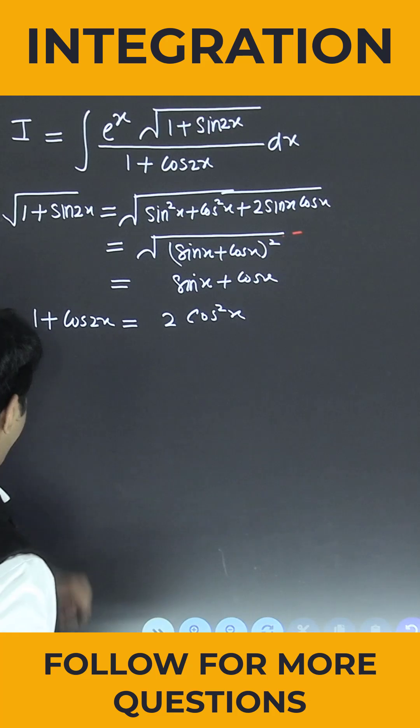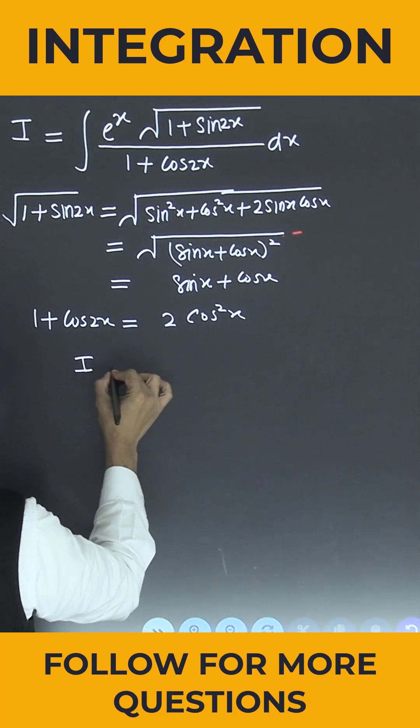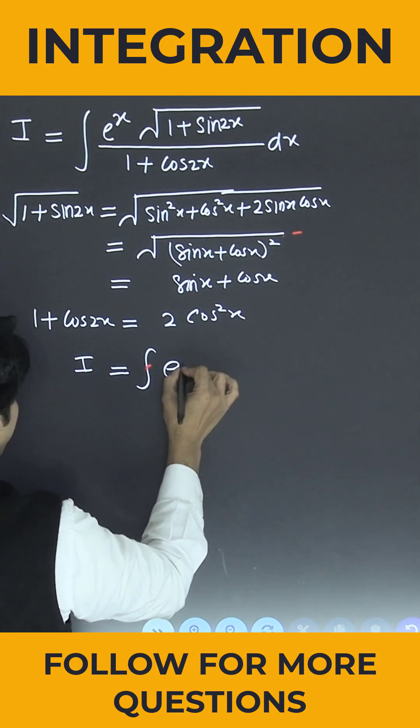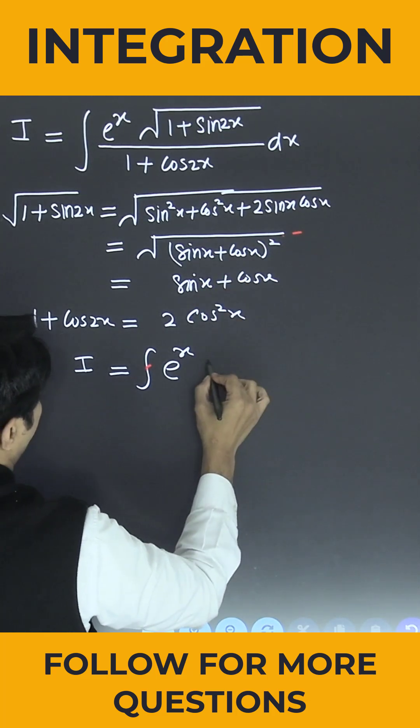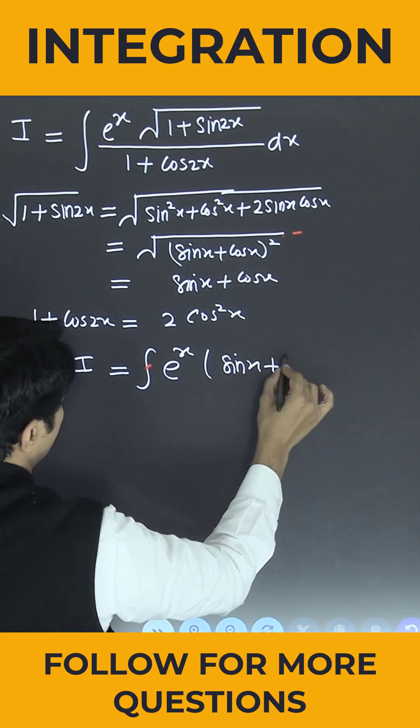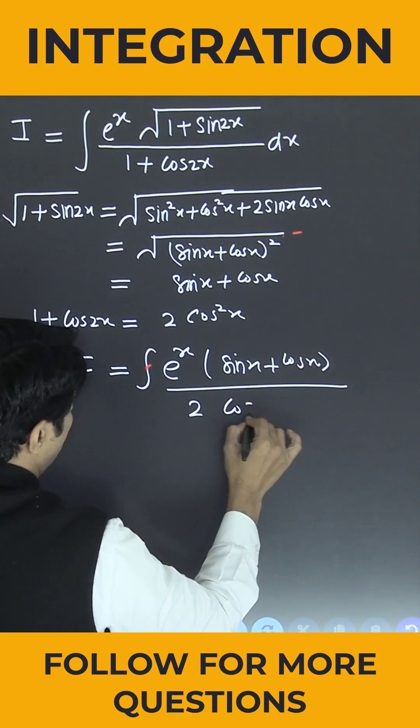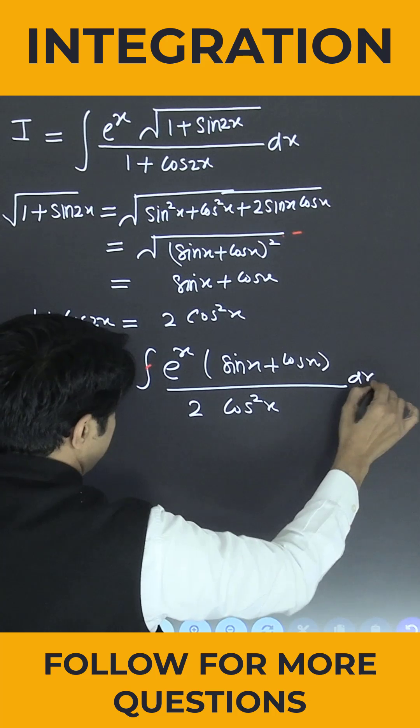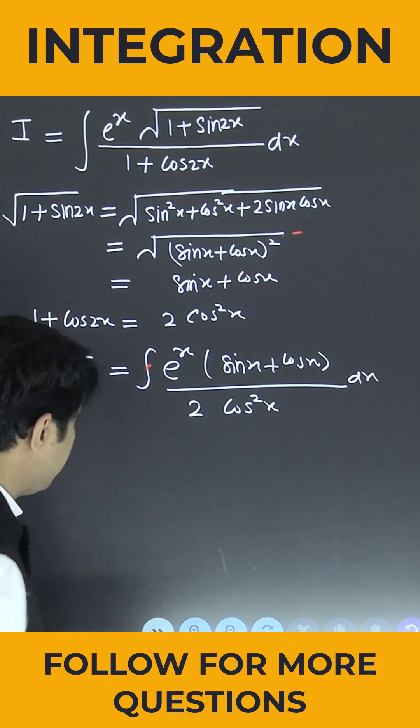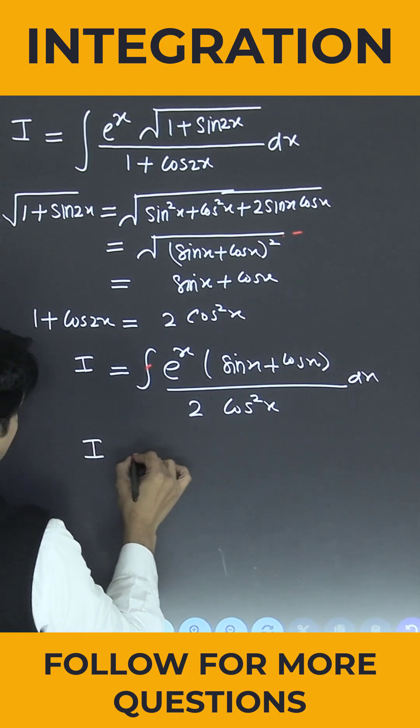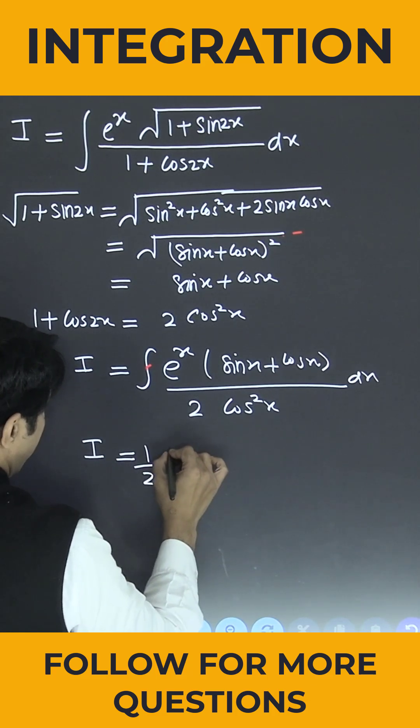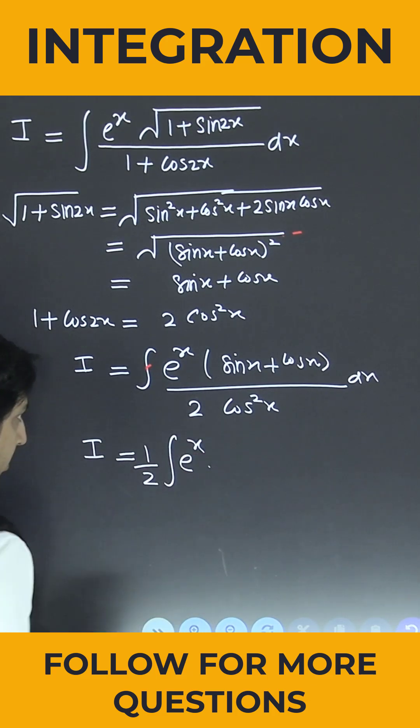Now simply put in the above integral, so that I equals the integration of e^x times (sin x + cos x) divided by 2 cos²x dx. Now let us separate this, so that I equals one-half times the integration of e^x.